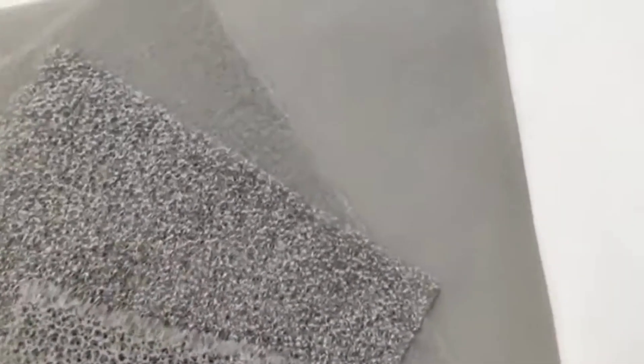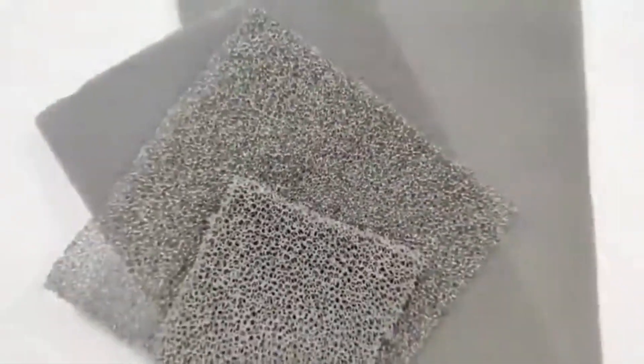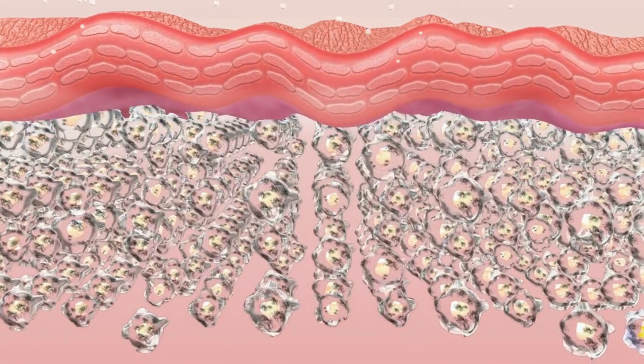So let's start with the basics — what exactly is nickel foam? Nickel foam is a porous material made from nickel, which is a type of metal. It's characterized by its high surface area and low density, thanks to its sponge-like structure. But why do we need such a material? Well, its unique properties make it incredibly useful in various applications.